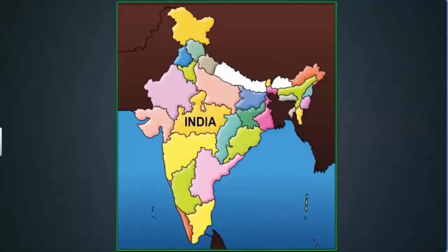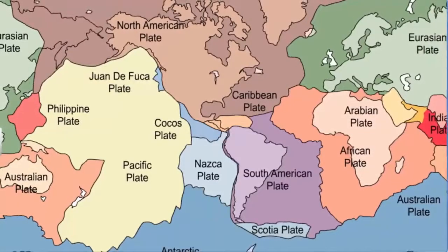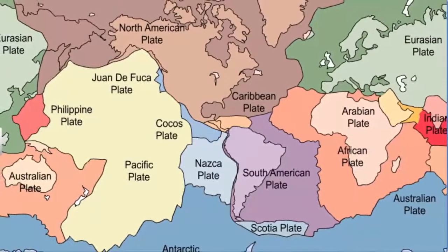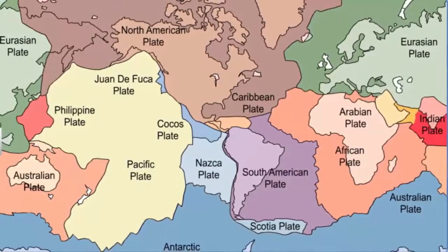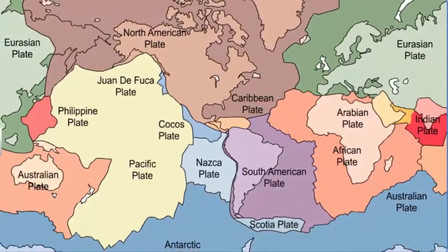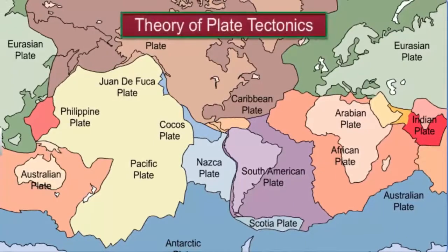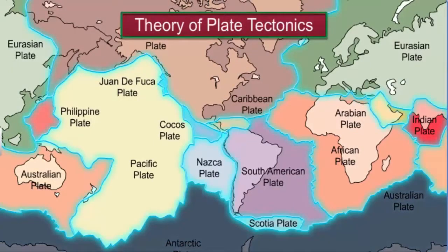No one knows exactly how India was formed. However, scientists have several theories that try to explain the process. One such theory is the theory of plate tectonics. According to this theory, the earth's crust is formed from seven major and some minor plates.